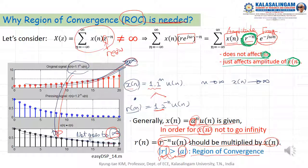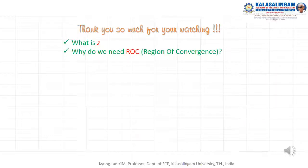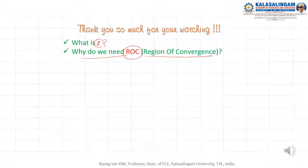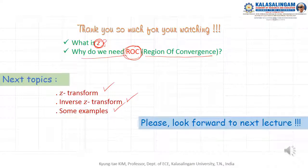With this ROC condition, we can change X of N from infinite to a convergent value. We call this the Region of Convergence. To summarize: today I explained what Z is and why we need the ROC. Next topic will be the Z-transform and inverse Z-transform with examples. Please look forward to the next lecture. Thank you very much.